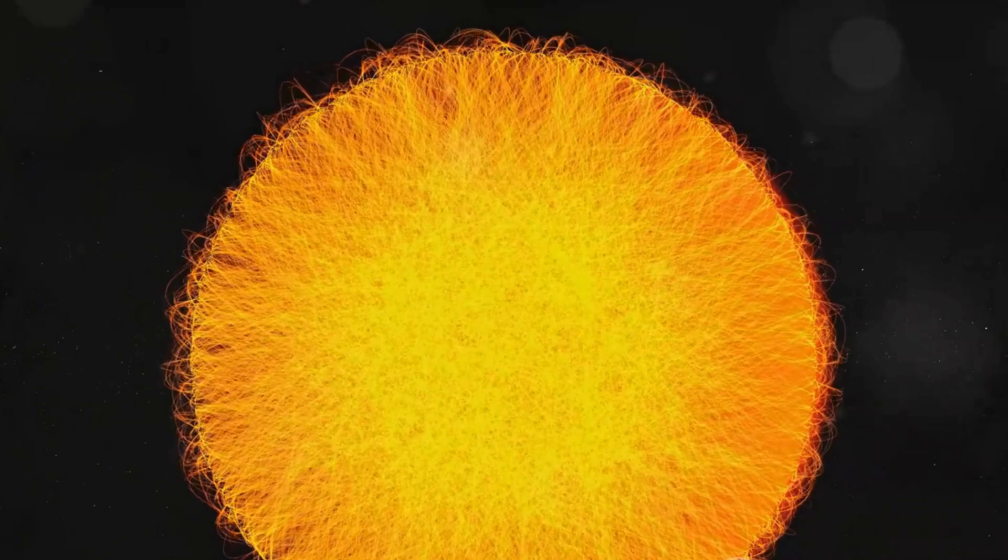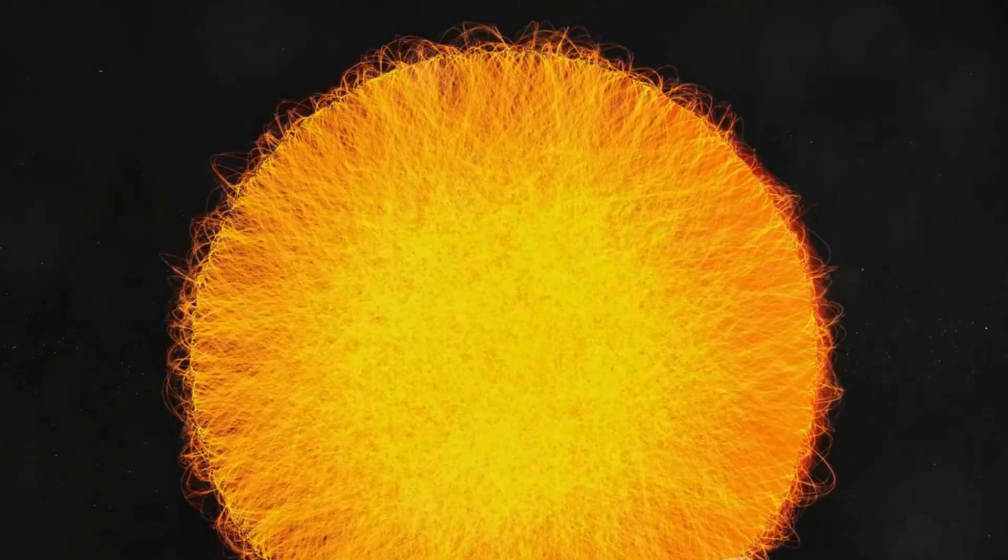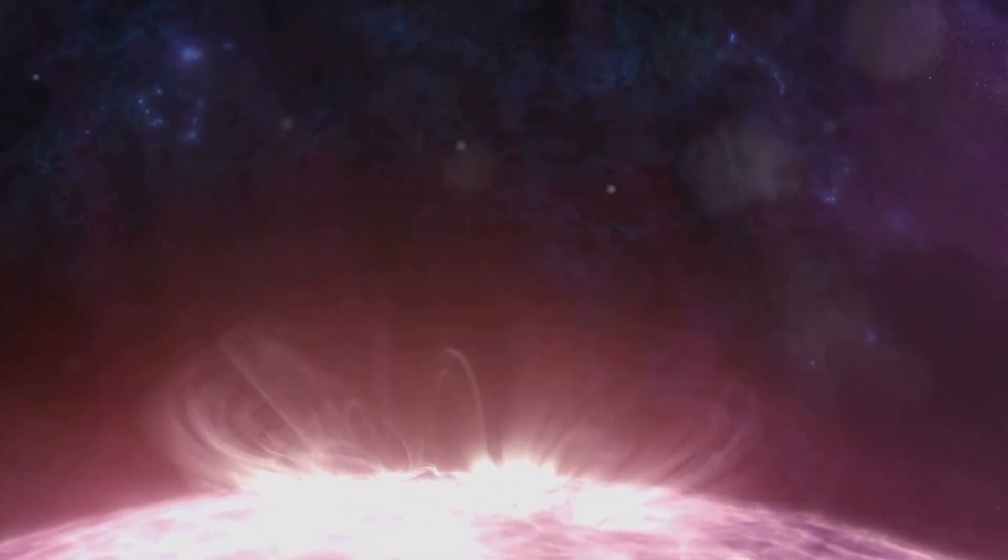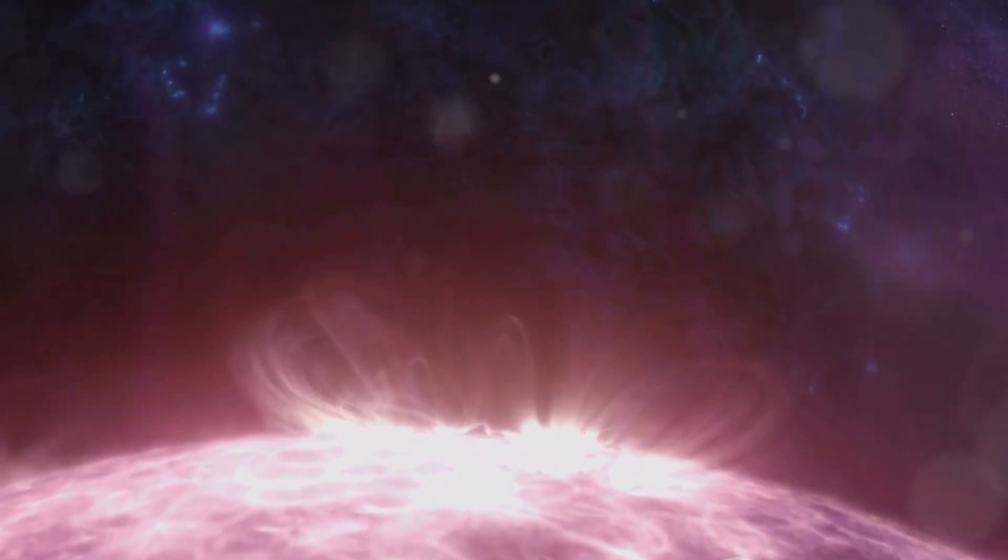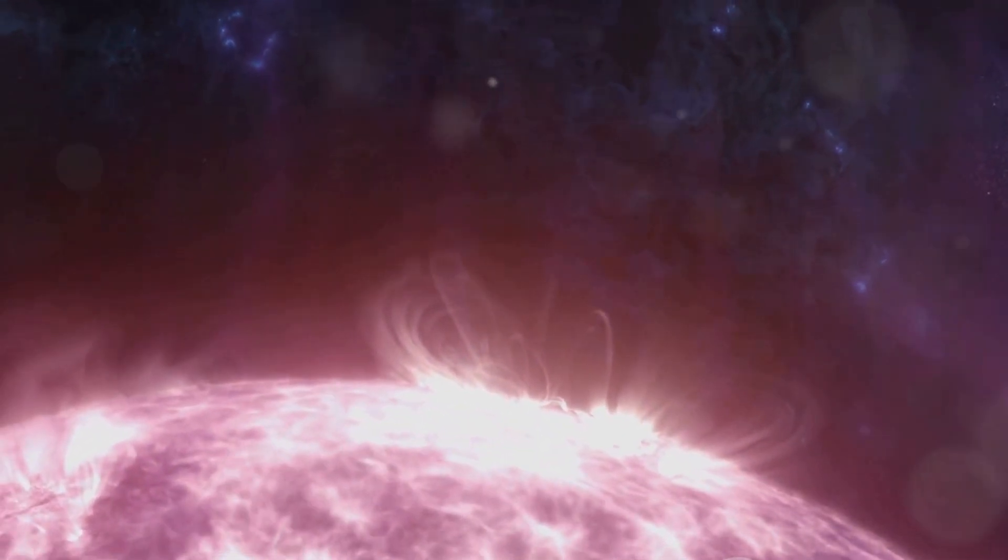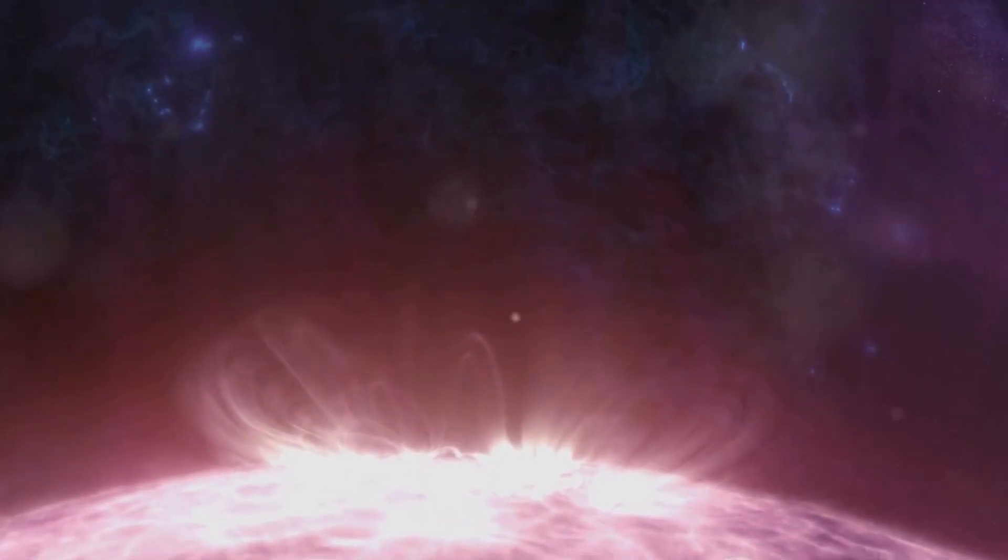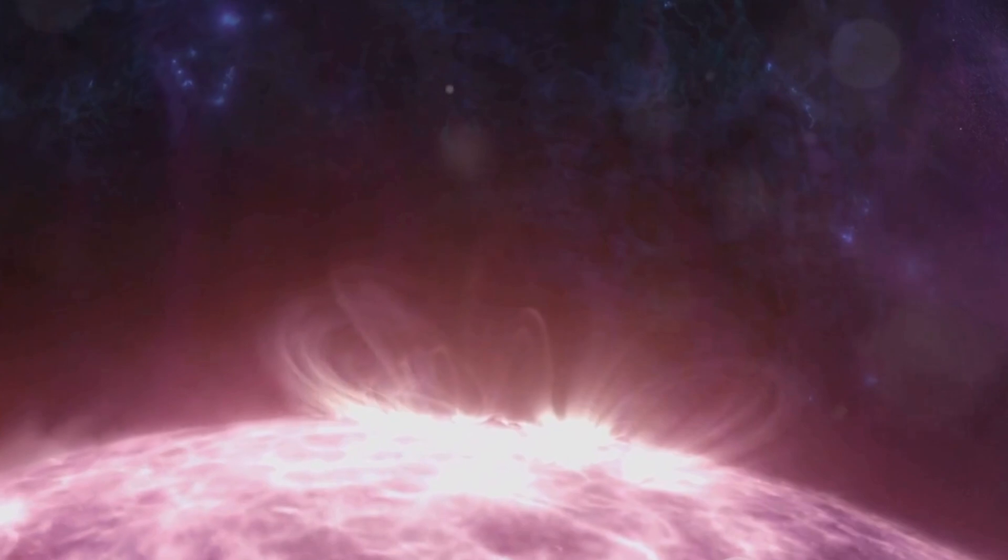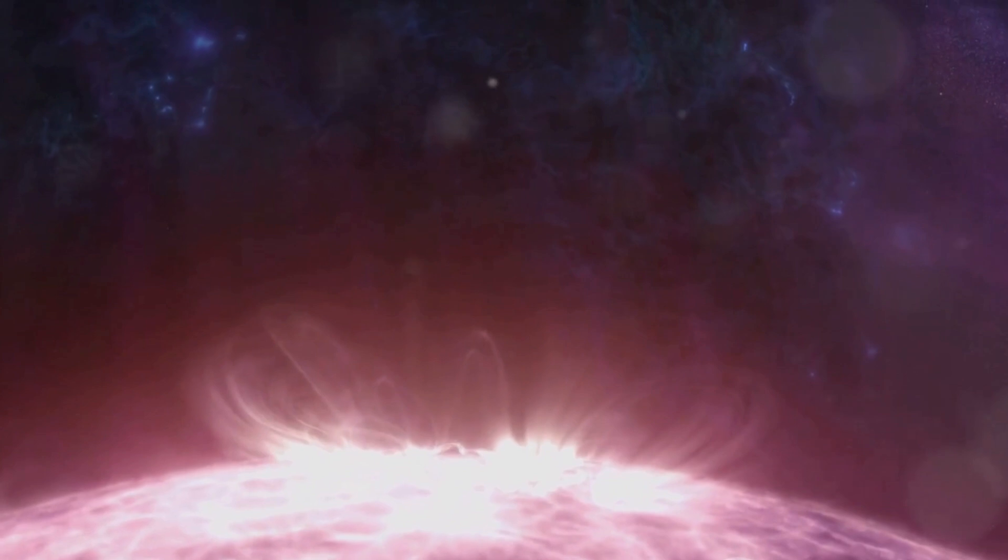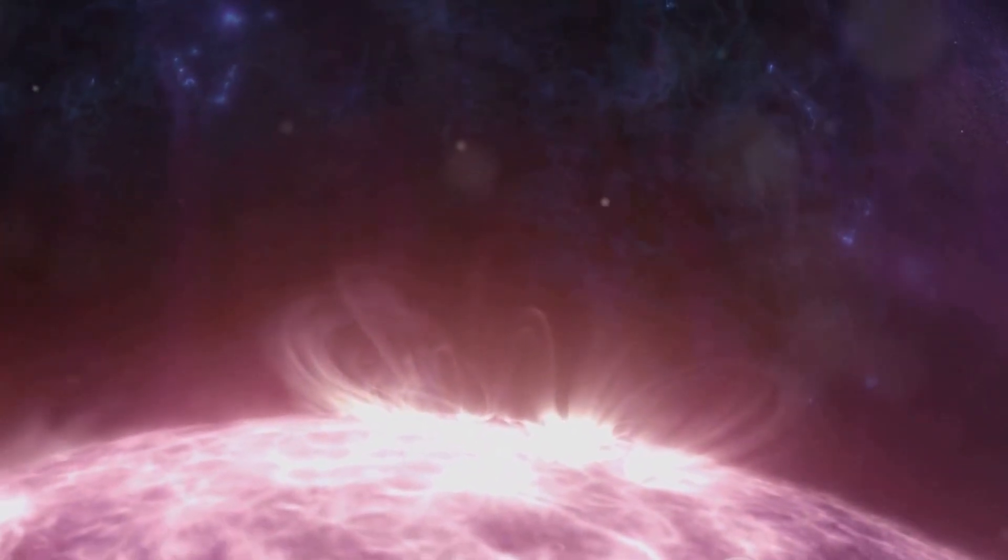Solar flares are one thing, but a solar storm is a whole different beast. Solar flares are violent eruptions that occur on the sun's surface, releasing significant amounts of energy into the cosmos. They can interfere with our technology and cause some stunning auroras, but their impact is generally limited. Solar storms, on the other hand, are not confined to a single eruption. They are a series of solar flares and coronal mass ejections, each one a massive burst of solar wind and magnetic fields. These storms are the sun's tempests, each one a relentless barrage of energy and particles.